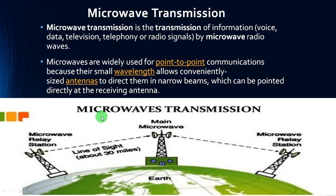Microwave transmission is the transmission of information — that is voice, data, television, telephony, or radio signals — by microwaves. Microwaves are widely used for point-to-point communication because their small wavelength allows conveniently sized antennas to direct them in narrow beams which can be pointed directly at the receiving antenna.